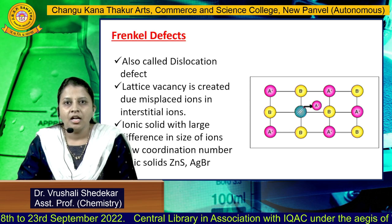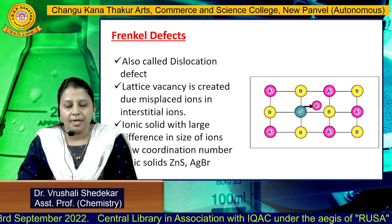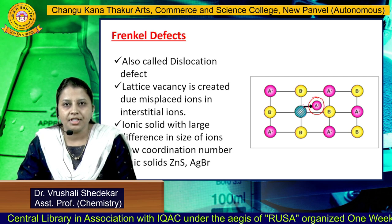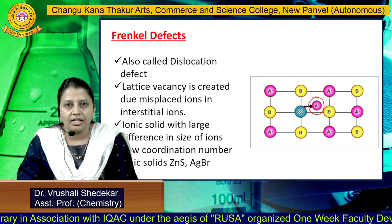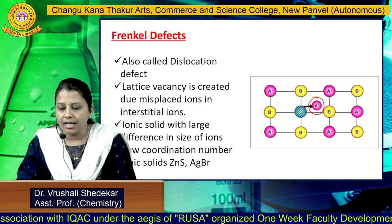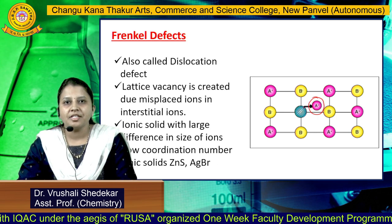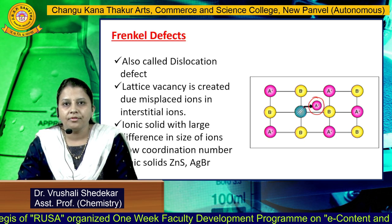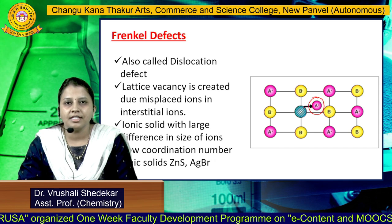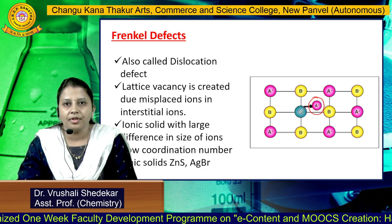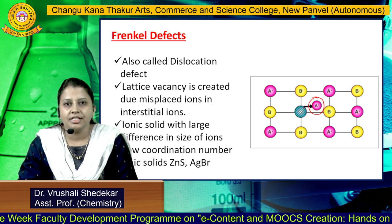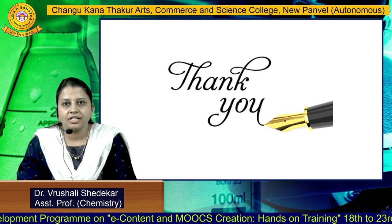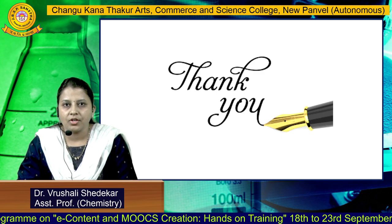The next is the Frenkel defect, also called the dislocation defect. Here, one of the ions goes into an interstitial site of the crystal. A lattice vacancy is created due to the misplaced ion. Ionic solids with a large difference in cationic and anionic size show this type of defect. The best examples are HgBr and ZnS. In the next lecture, we will discuss the remaining crystal defects. Thank you, students.